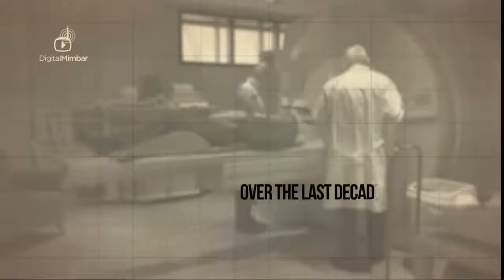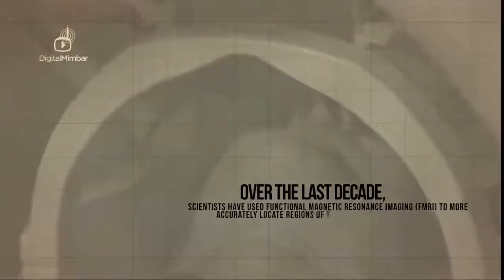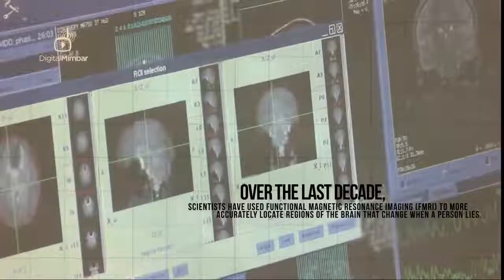Over the last decade, scientists have used functional magnetic resonance imaging, fMRI, to more accurately locate regions of the brain that change when a person lies.